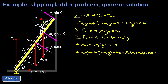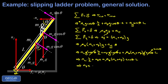After dividing by cosine theta we have: m_L times L/2 plus m_P times x equals mu_s times (m_L plus m_P) times tangent theta times L. Subtracting the first term on the left and factoring out L from the right side gives m_P times x equals L times [mu_s (m_L plus m_P) tangent theta minus m_L over 2].